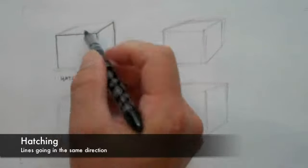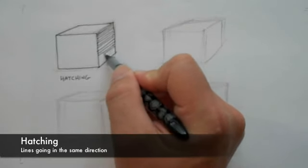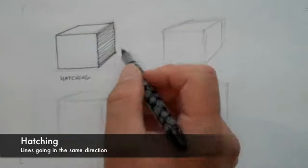And the first technique we're going to talk about is hatching. Hatching is where you have straight lines that go in the same direction. By placing the lines closer together, you create darker values.